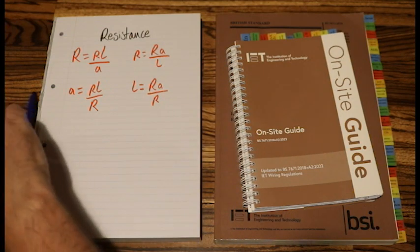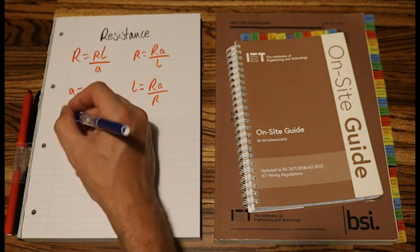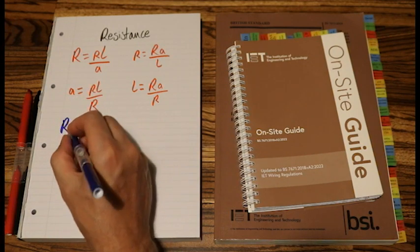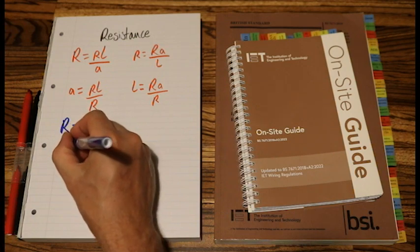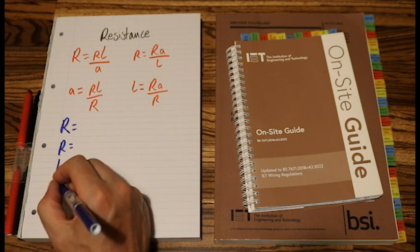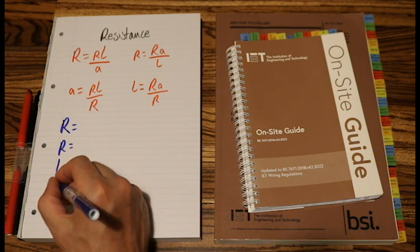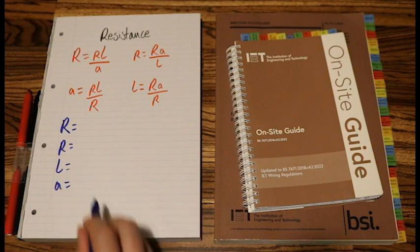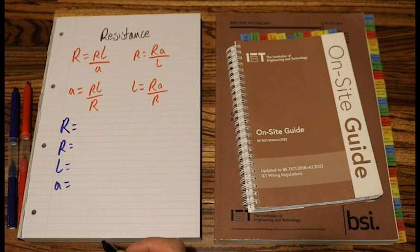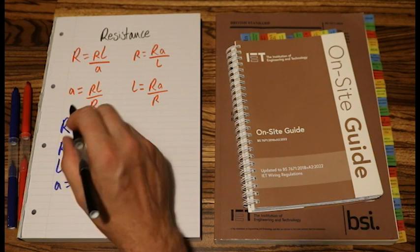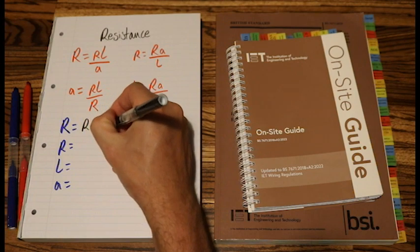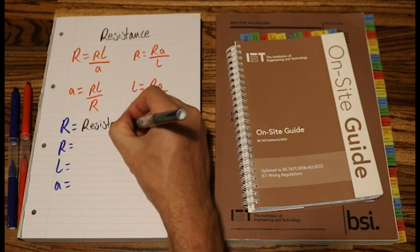Let's switch pens. Let's write down each of the letters. So, capital R, that is resistance.